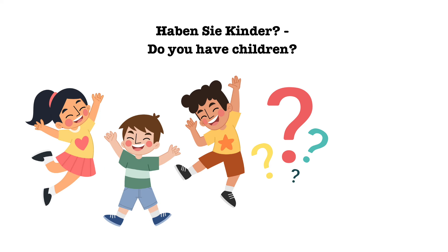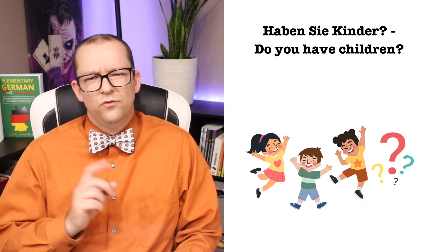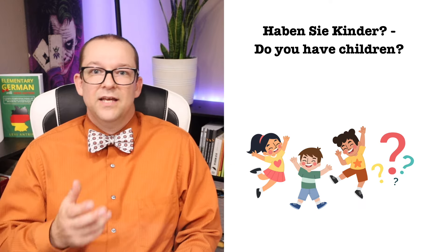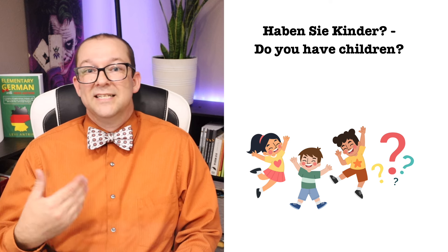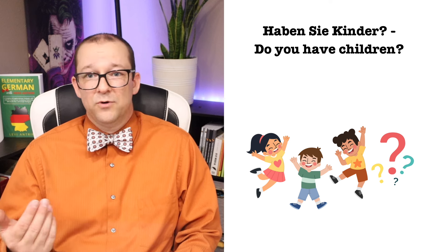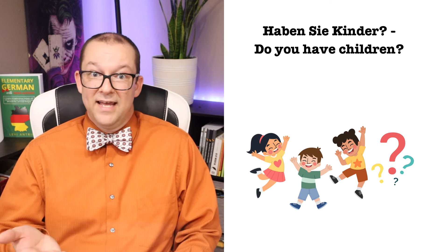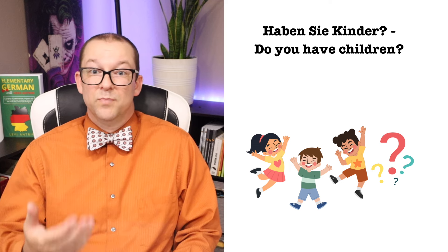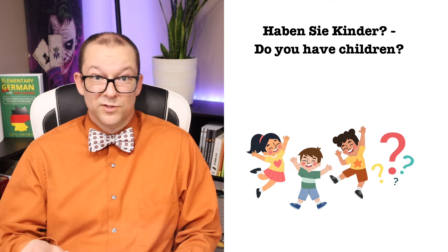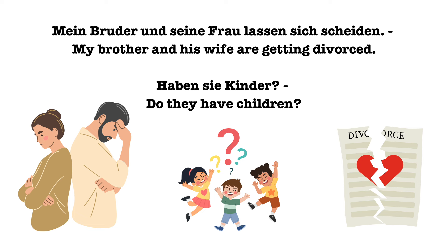'Haben Sie Kinder?' — Do you have children? This sentence is translated with 'you' because 'Sie' is capitalized, but when said out loud, there is no way to tell whether 'sie' means you or they. To avoid this confusion, you need more context. If you're talking directly to someone, assume 'sie' means you. If you're talking about a couple not in the conversation, the only logical translation would be they: 'Mein Bruder und seine Frau lassen sich scheiden. Haben sie Kinder?' — My brother and his wife are getting divorced. Do they have children?